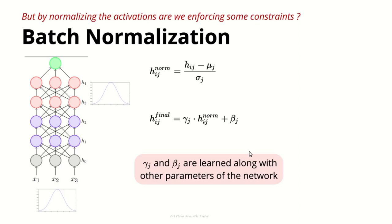So by introducing these parameters, we let the network decide at what extent they want to normalize this. Do they want to fully normalize it, or do they want some other kind of shape? These parameters are actually trained with the network.